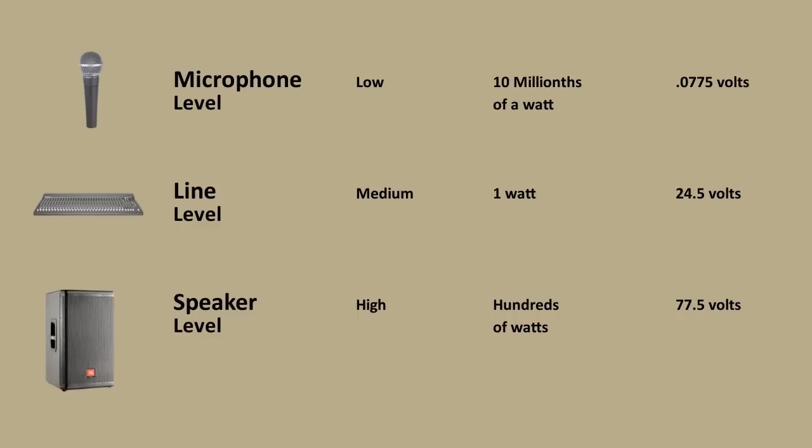The third major analog audio signal type is speaker level. Speaker level is the highest level of signal, and it can range anywhere from plus 30 dBU on up to plus 50 or even much higher — anywhere from 15 watts to 500 watts to 5,000 watts, depending on the scale of your system. We're talking major power here. The best example of speaker level would be going from a power amplifier to a speaker — that's pretty much where you see speaker level.